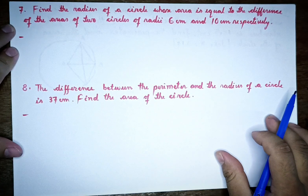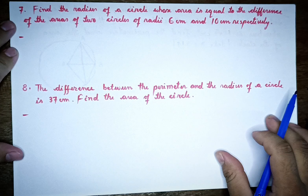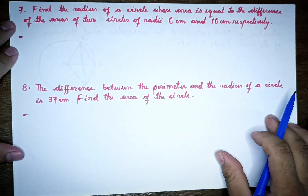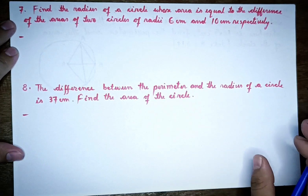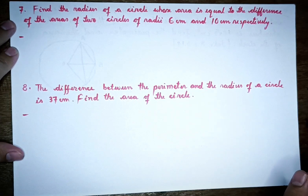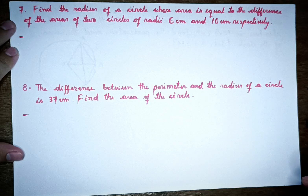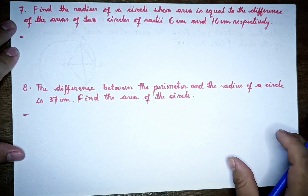The question is: find the radius of a circle whose area is equal to the difference of the areas of two circles of radii 6 cm and 10 cm respectively.